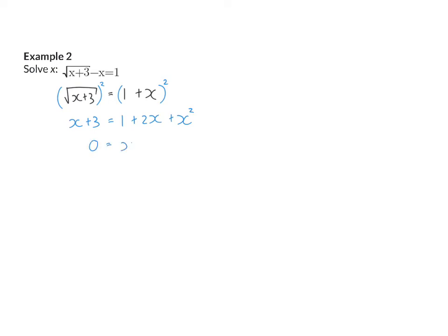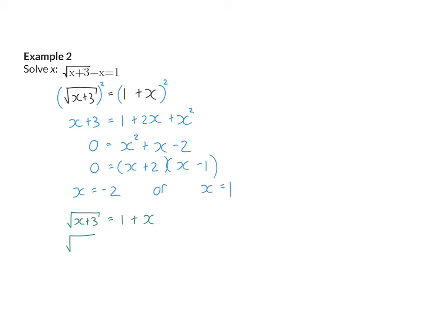Now I have my quadratic equation again. I take all terms to one side equal to 0 and factorize into x plus 2 times x minus 1, giving x equals negative 2 or x equals 1. Testing: substituting minus 2 gives the positive root equal to a negative number — not valid. Substituting 1 gives a positive root equal to a positive answer, which is fine. So x equals 1 is the solution.